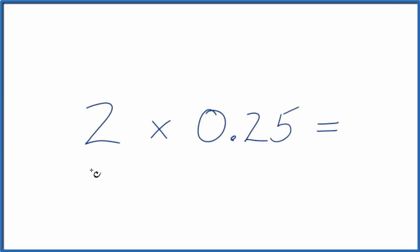In this video, we're going to multiply 2 times 0.25, and we'll look at a few ways you could think about that.